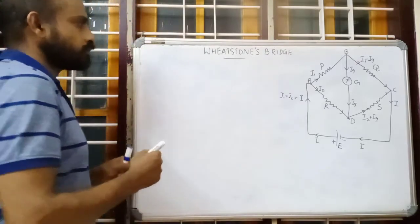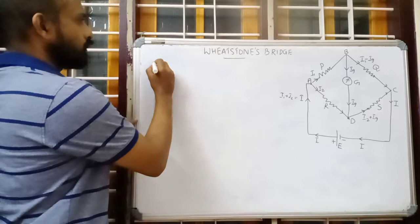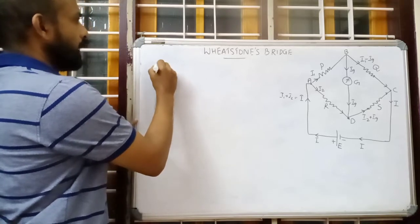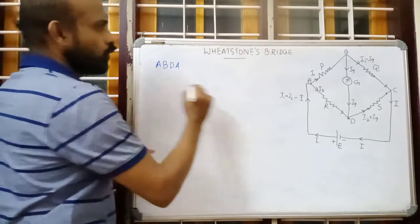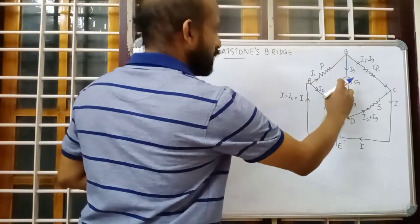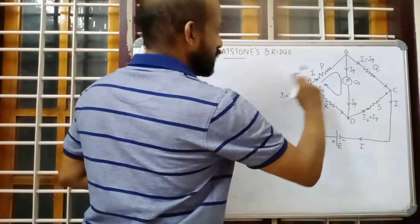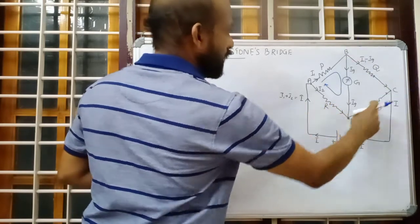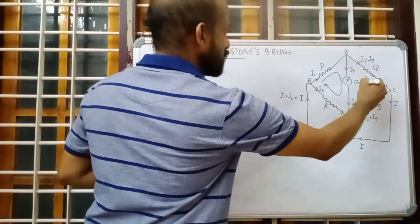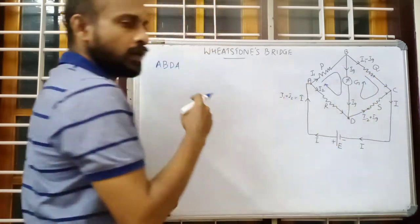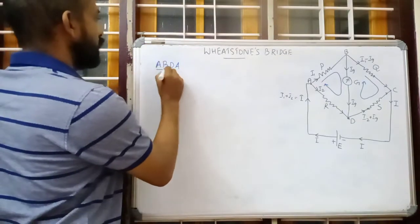Now we will apply Kirchhoff's laws. We need to apply the mesh rule for two loops. The first loop is A-B-D-A, and the second loop is B-C-D-B. In both loops, we are traversing in the clockwise direction.